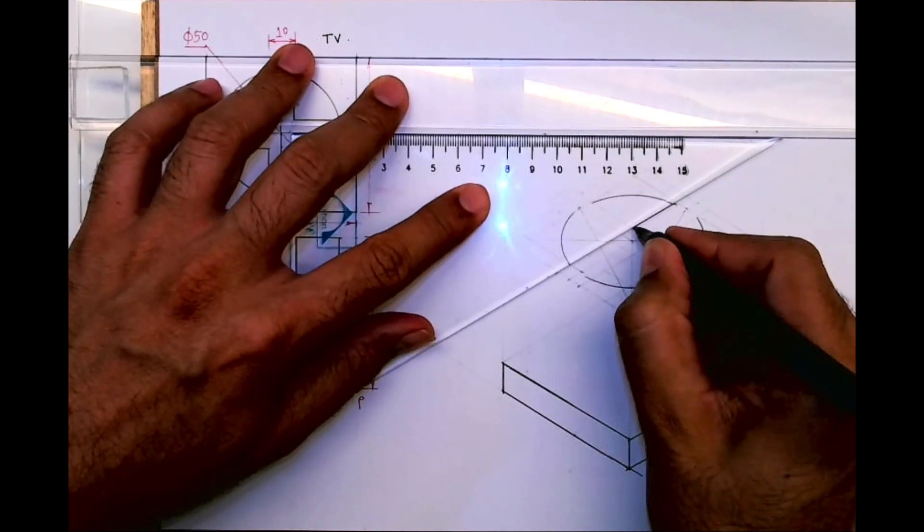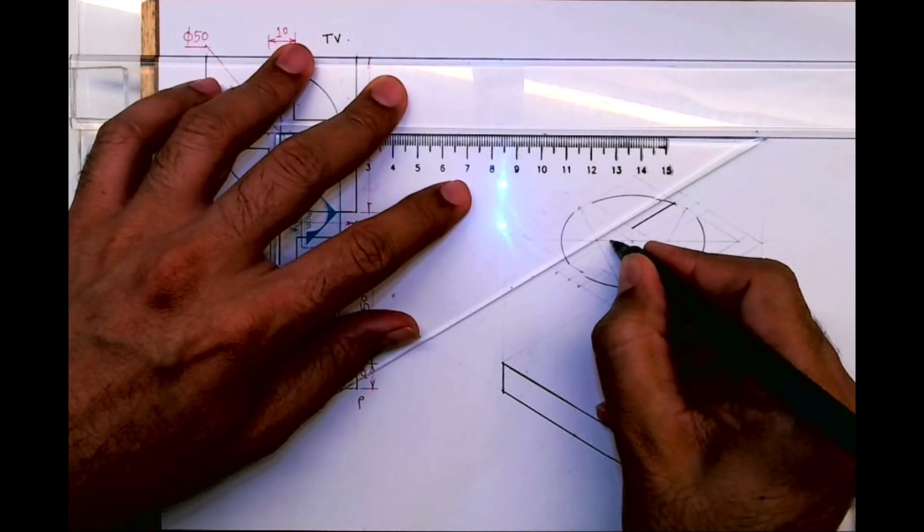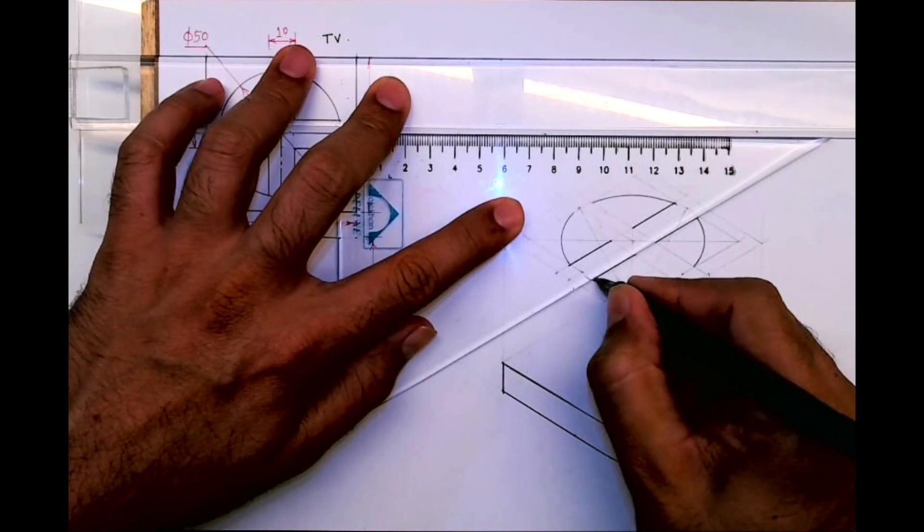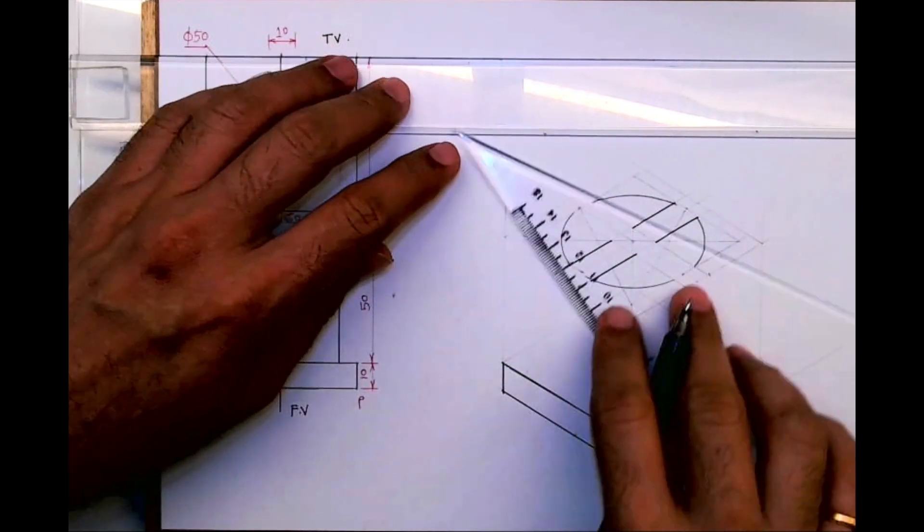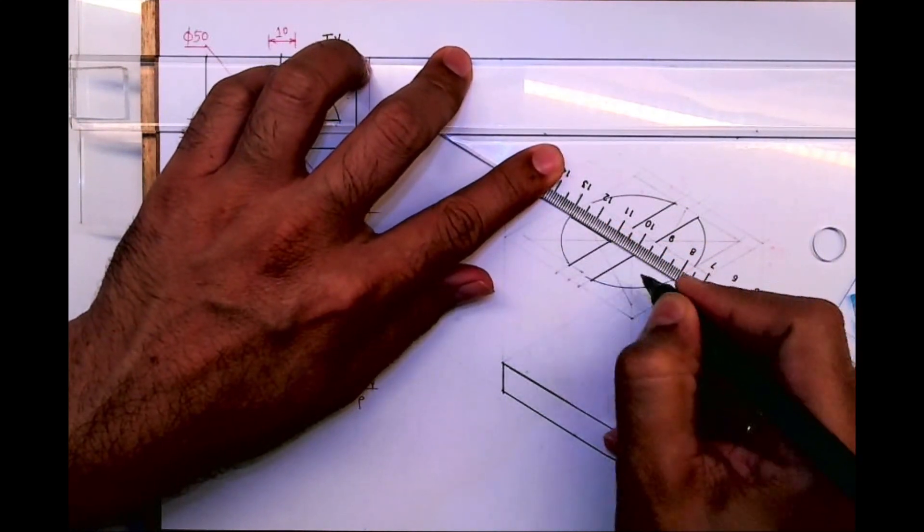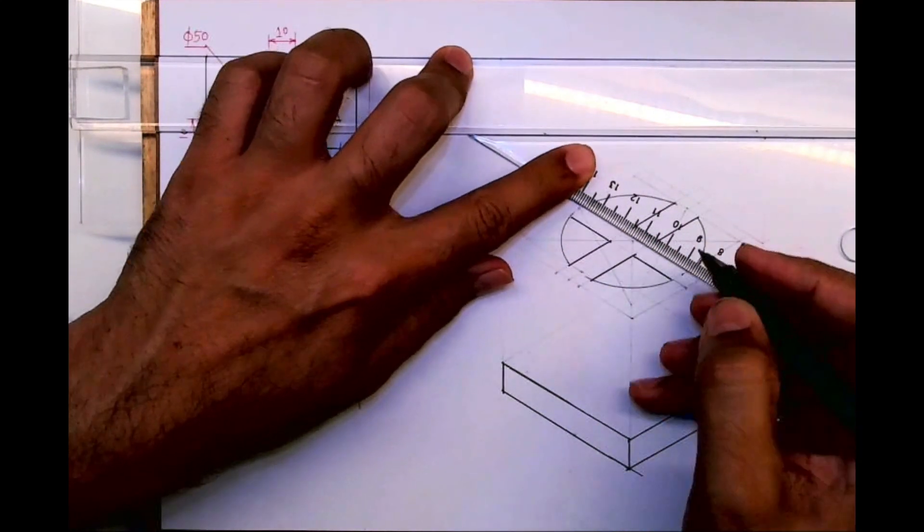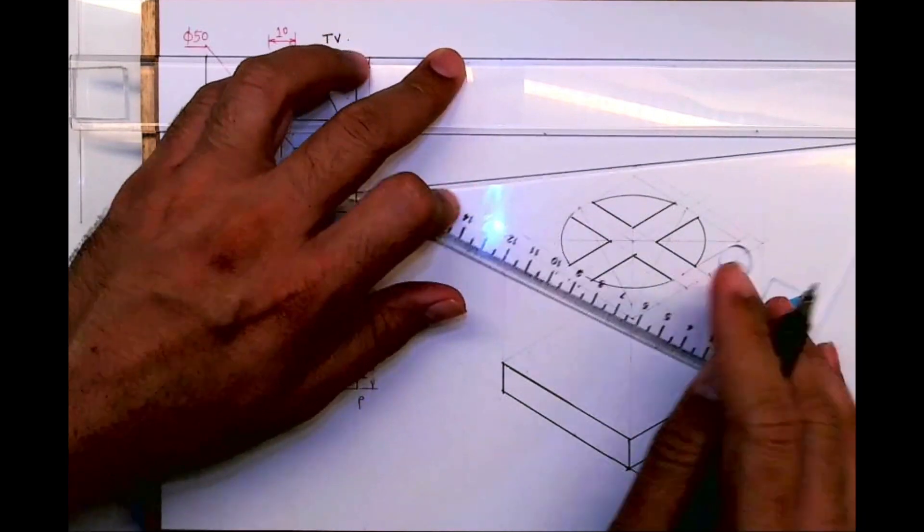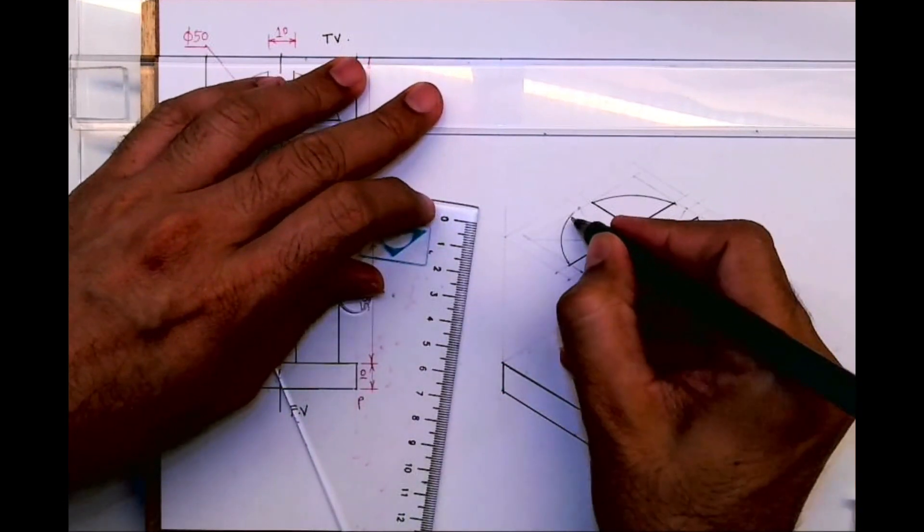After that we can draw this, we can extend. So this is what you will get in top view. Now we need to project everything down.